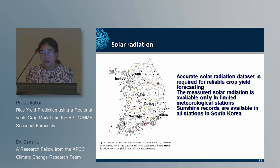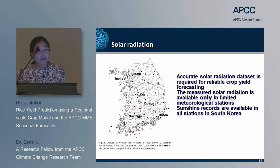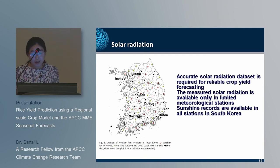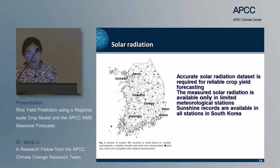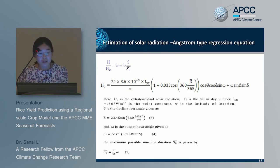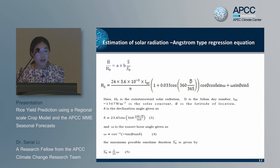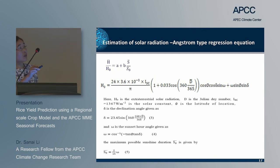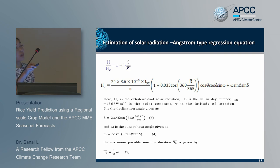Accurate solar radiation data is required for reliable crop yield forecasting. However, in South Korea, measured solar radiation is only available at limited meteorological stations, while sunshine duration records are available for all stations. Therefore, sunshine duration is used to estimate solar radiation using the Angstrom-type regression equation, where H-bar is the estimated solar radiation, H0 is the extra-terrestrial solar radiation, A and B are constant values, and the ratio of sunshine duration to maximum sunshine duration is used.